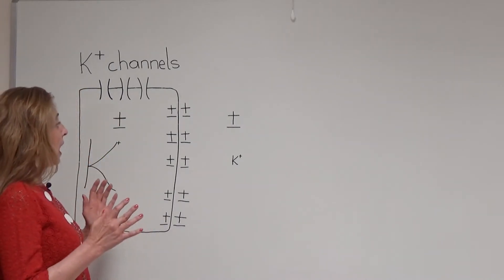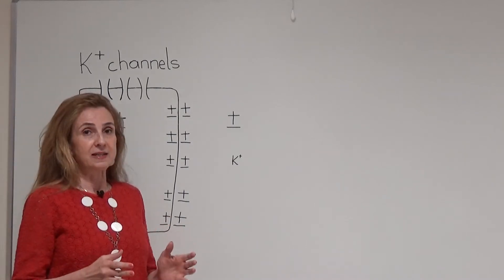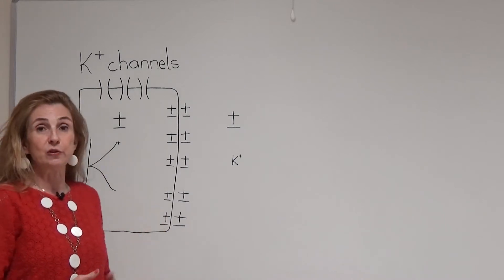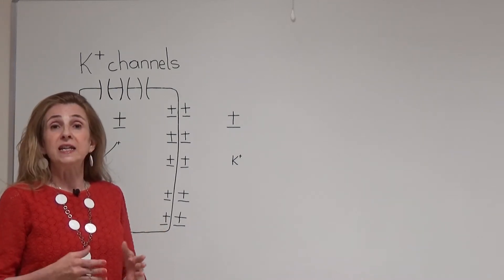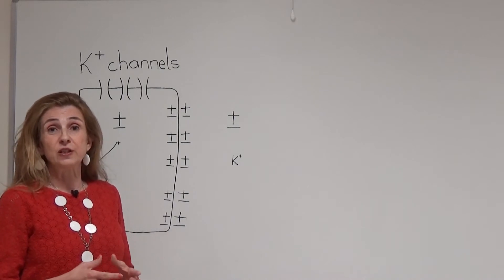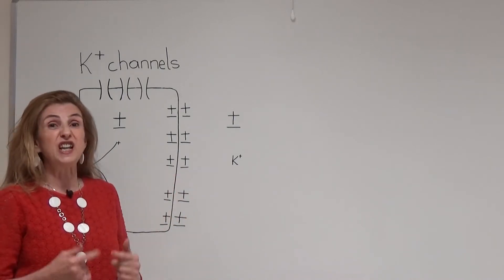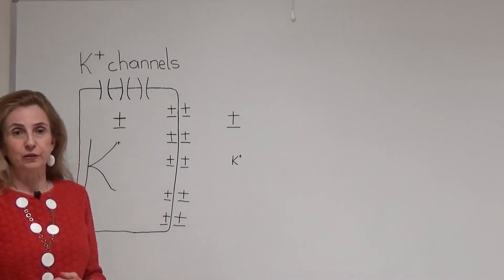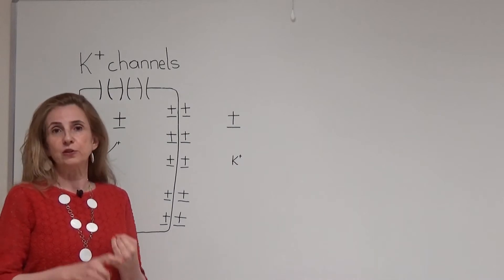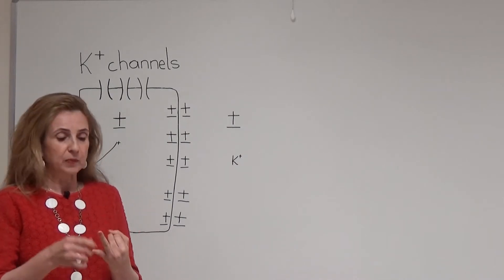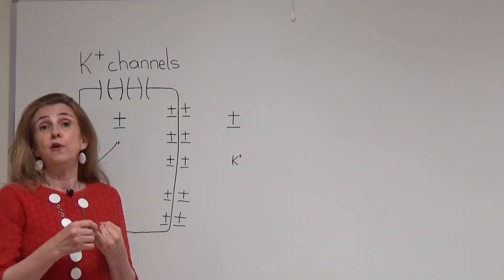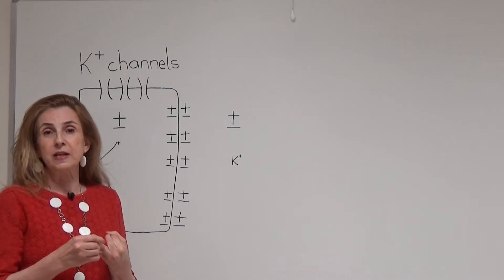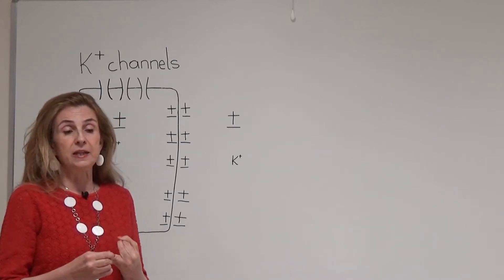So every ion that has a concentration difference between the intracellular and extracellular fluids can produce an electrical potential difference across the membrane if the conditions are supplied. What are the necessary conditions? One: there must be a concentration difference for the ion. Two: for this ion to pass through the cell membrane, the membrane must be permeable to this ion, which means there must be ion channels in the membrane.